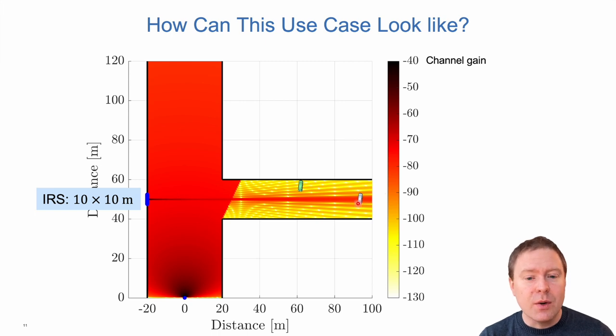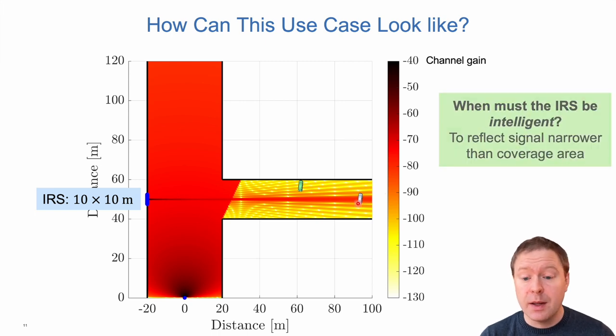So here is one particular use case. And one can think about, should the IRS really have to be intelligent in this case? Well, if you only want to reflect the signal into the entire street as when we had a one by one meter array, then it doesn't need to be intelligent. We just fill the neighboring street with a little bit of power. But now when the beamforming is so narrow that it's only capturing one device at a time, we will have to make it intelligent so we can steer around the beam direction depending on where the user is, so we can also serve the green user.